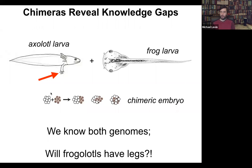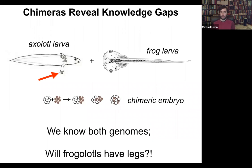We have the axolotl genome, we have the frog genome, and now we ask a simple question: do frogolotls have legs? Even though we have all this information, we actually have no idea how to predict in advance whether frogolotls will have legs, and if so, will they be made entirely of axolotl cells, or both types of cells? These are the kinds of things that we would actually like to understand.